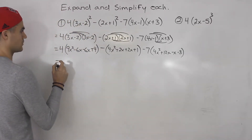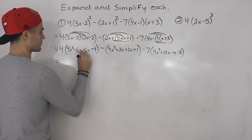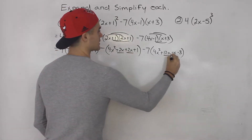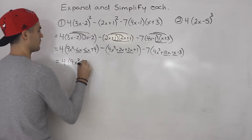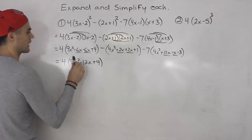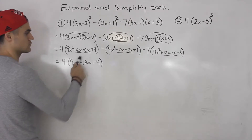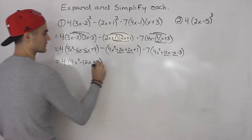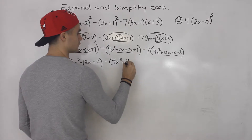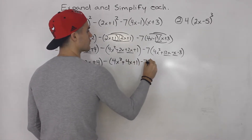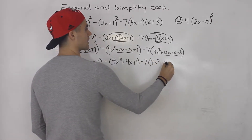At this point we could distribute the 4 inside the bracket, but before we do I would first simplify each of these brackets — look at the like terms. So this would be 4(9x squared minus 12x plus 4). Then 4x squared plus 4x plus 1, minus 7, and this would be 4x squared plus 11x minus 3. I usually like to simplify first — the chances of making a mistake are less.